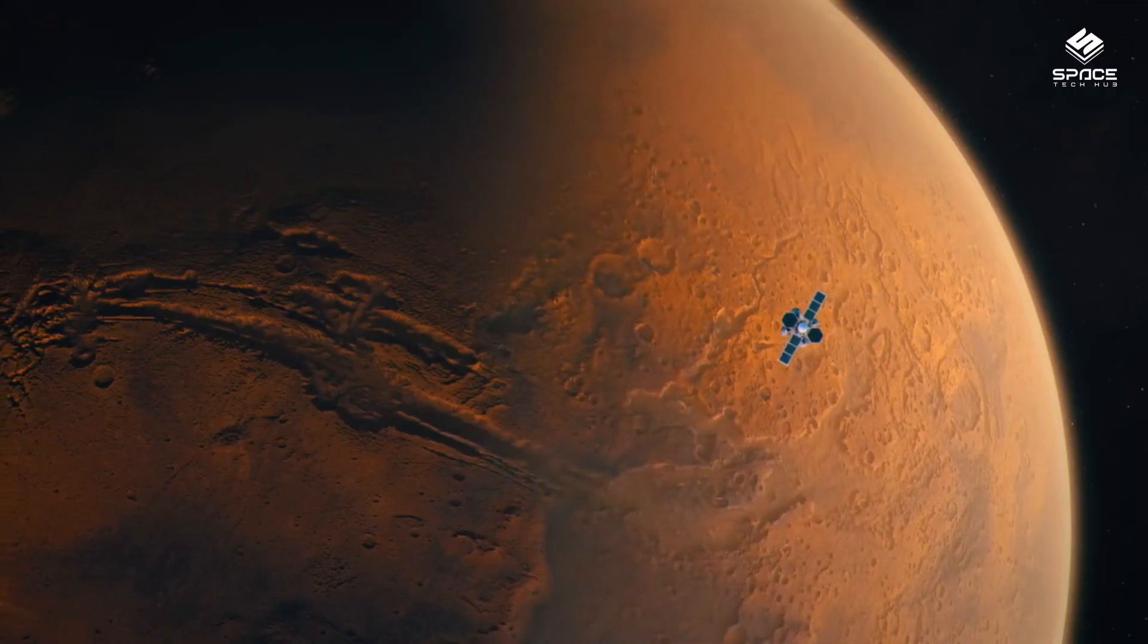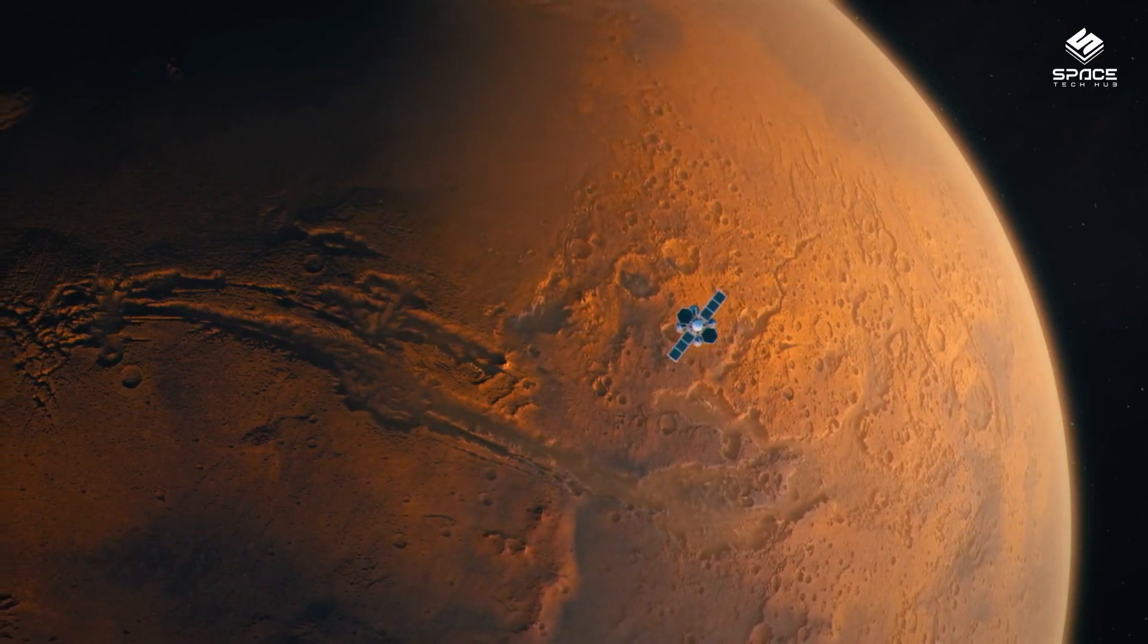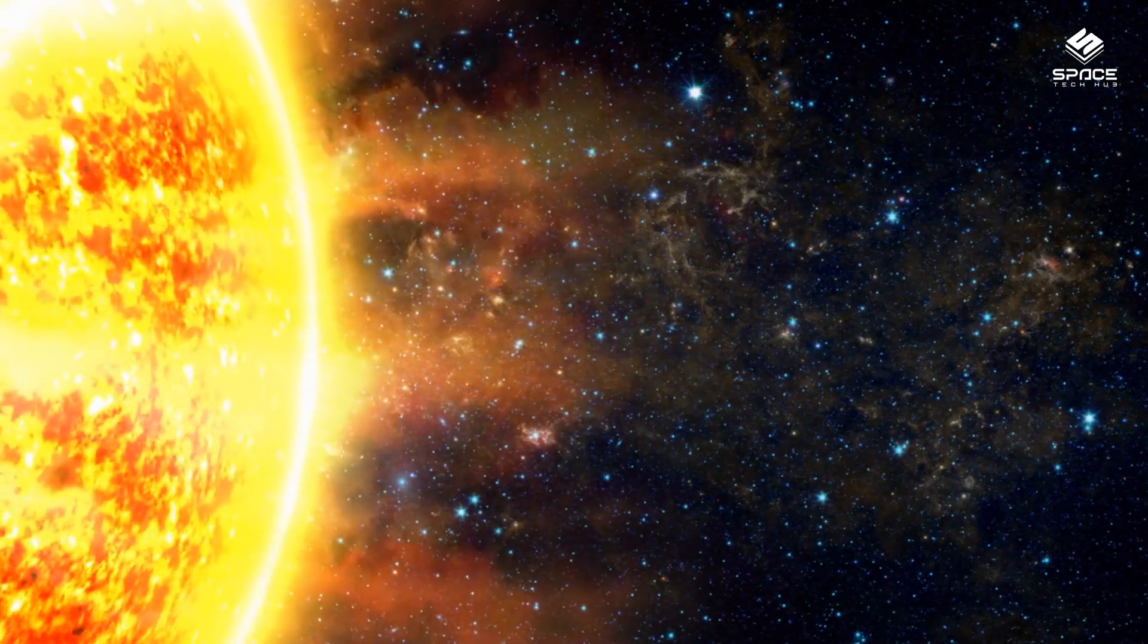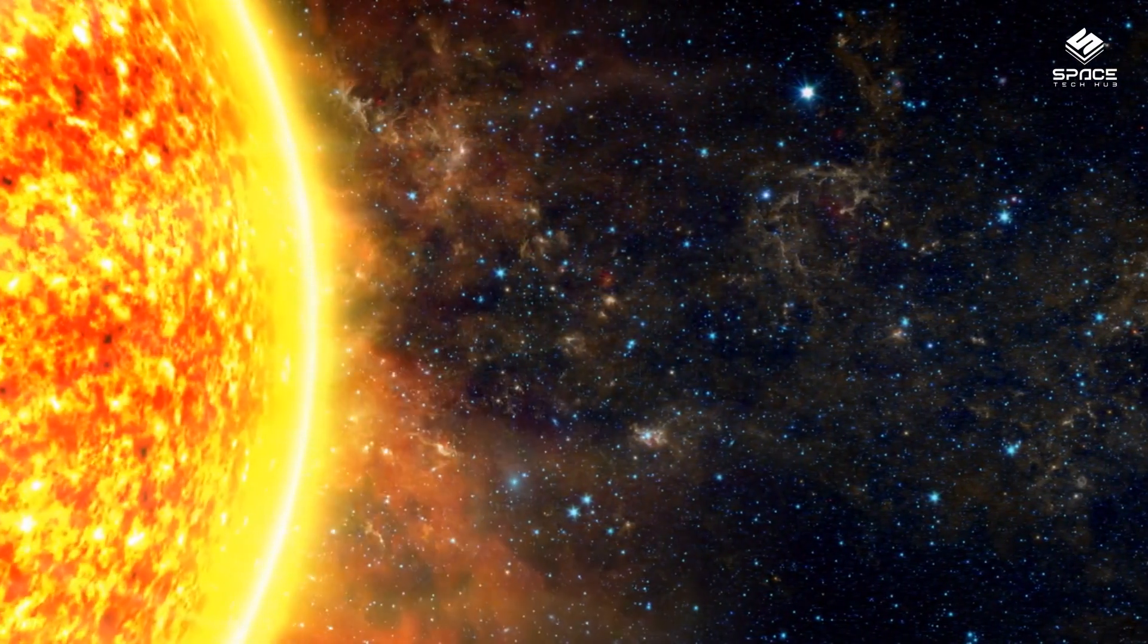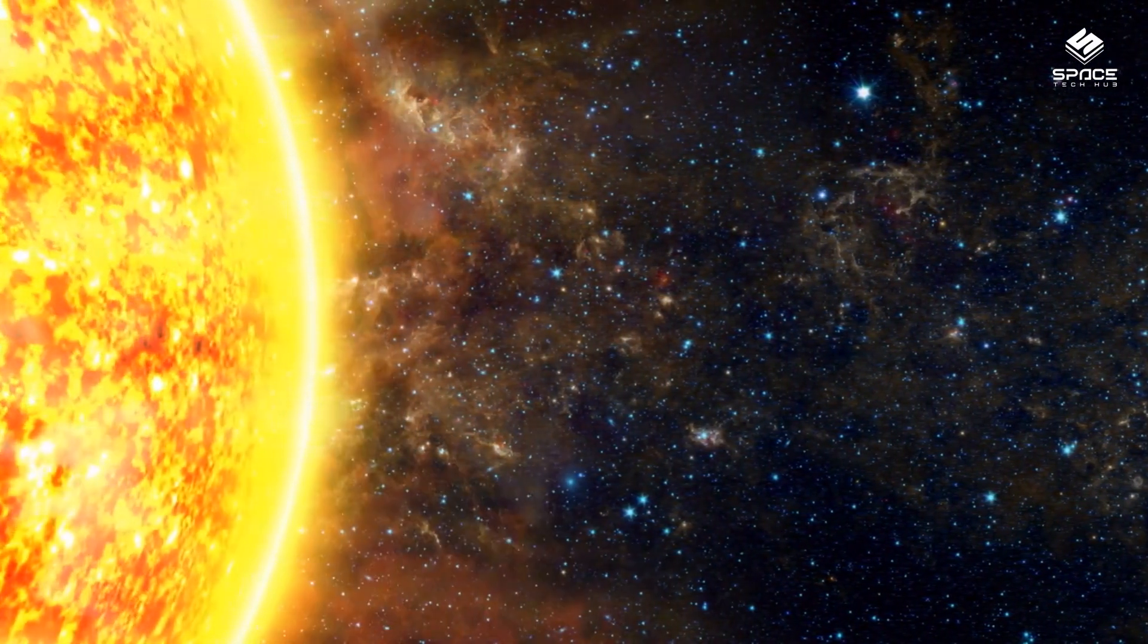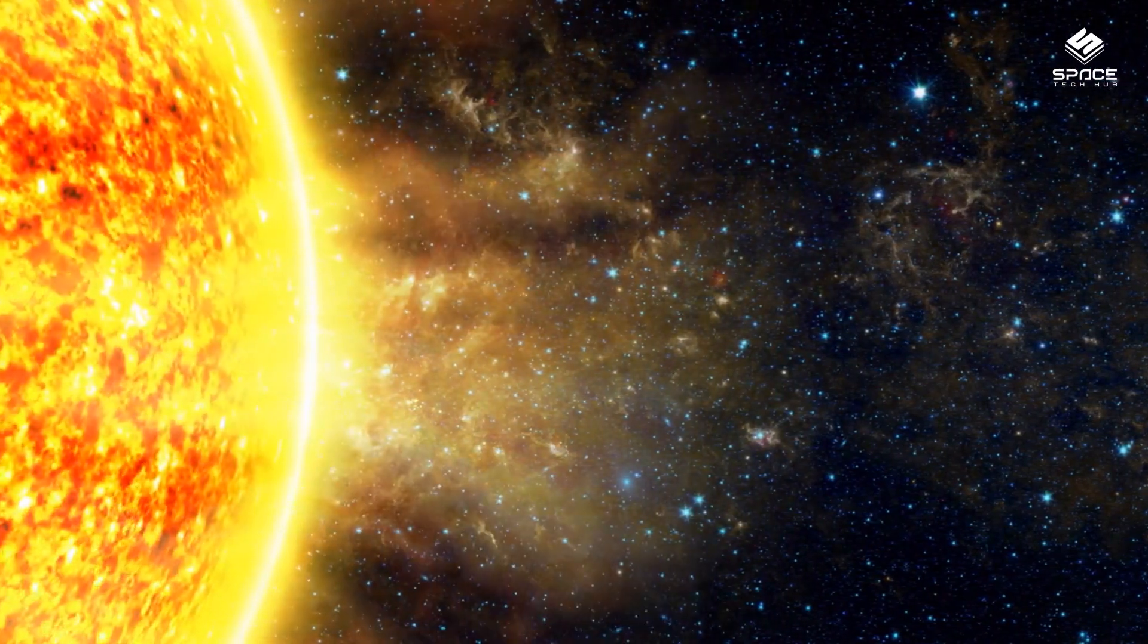To the left of Mars, you will see Jupiter, which is also very bright and noticeable. Jupiter is the largest planet in the solar system and it has four large moons that you can see with a telescope: Io, Europa, Ganymede and Callisto.